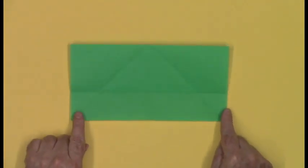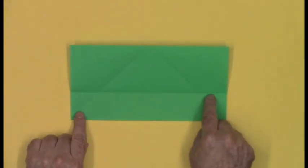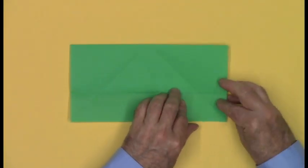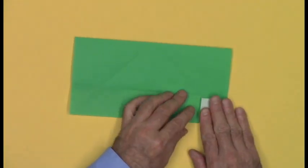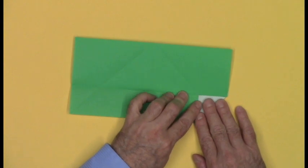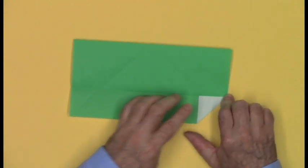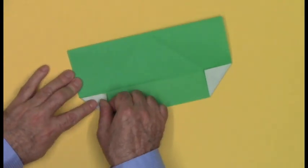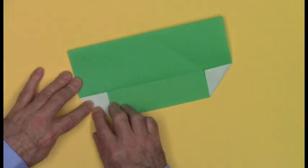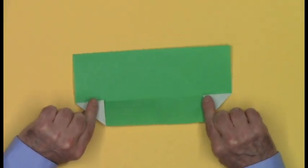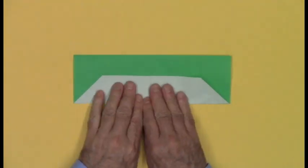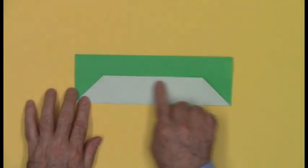Unfold that flap. And fold the two bottom corners to form triangle flaps, aligning their top edges with the horizontal crease. Fold this flap up, and you'll see a trapezoid.